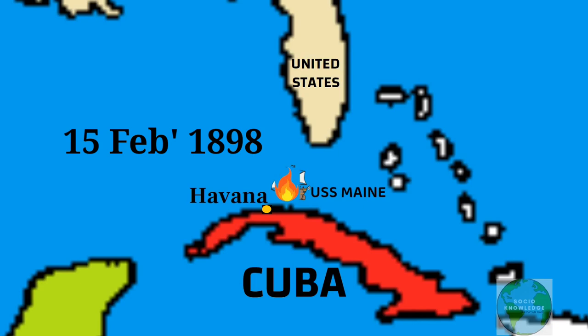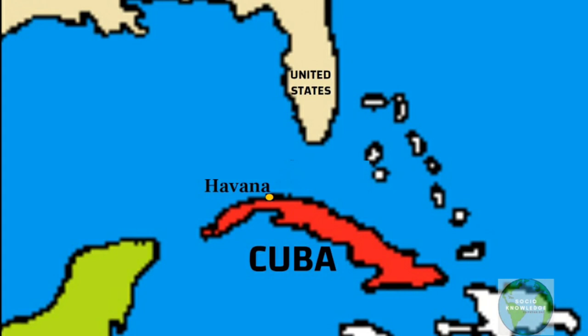On February 15, 1898, the USS Maine exploded and sank in Havana harbor, killing 250 of the 355 sailors on board. There was no clear evidence on the cause of the explosion, but the American citizens believed that Spain was the culprit.